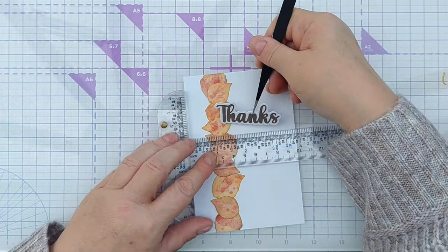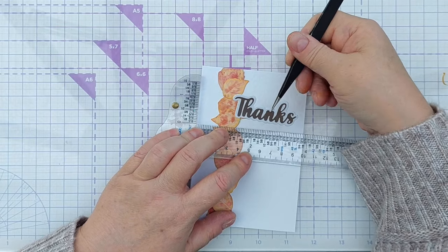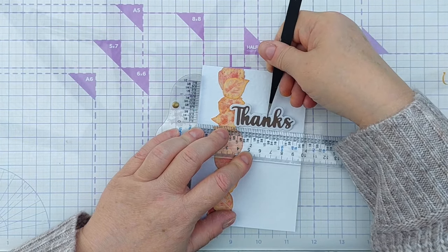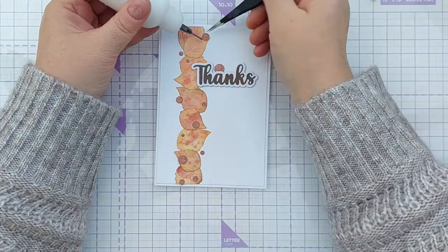I deliberated about where to put this on the card, whether to put it near the top or the bottom, and I eventually settled for the top. And I used my T-square ruler to help me get that on straight.